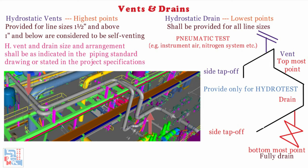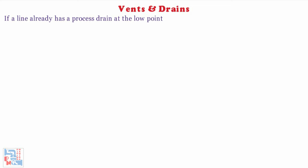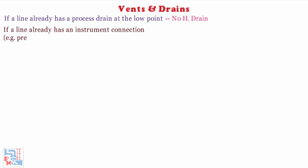Hydrotest drains shall not be provided if a line already has a process drain at the lowest point of the piping system — the process drain itself acts as the hydrotest drain in such cases. Hydrotest vents shall not be provided if a line already has an instrument connection, for example a pressure or temperature instrument, at high points of the piping system. This connection itself shall act as the hydrotest vent.